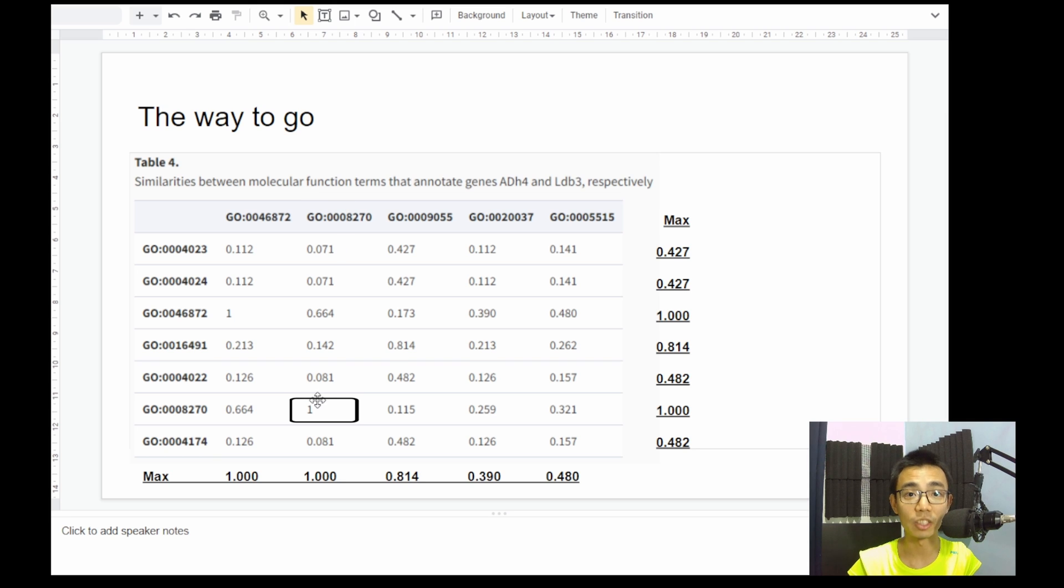So you can see if the GO terms are exactly the same, it is a one because there's no jump between one GO term to another. So it's a one. And the further away it is, you can actually see that the jump become lower and lower and lower until you reach something like 0.071. I believe they are the furthest away in the same GO ontology.